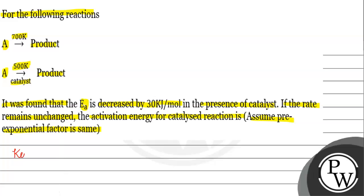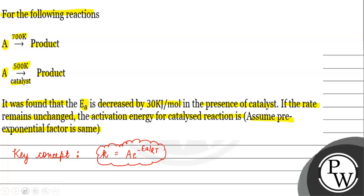The key concept for this question is the rate constant. Let's write: K is equal to A times e to the power of minus Ea over RT. This is in accordance with the Arrhenius equation.